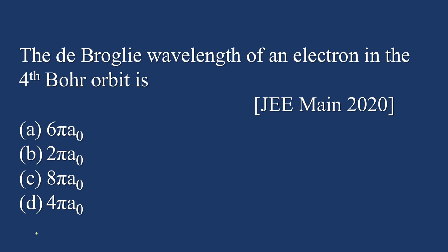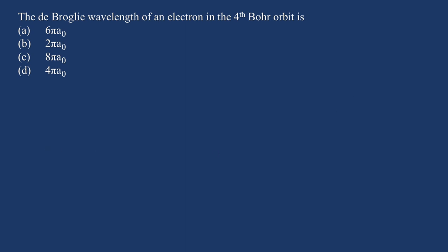The de Broglie wavelength of an electron in fourth orbit is... four options are given, we are going to calculate the answer. Now for calculating this we can use this formula: n lambda equal to 2 pi r. This is de Broglie equation. We are going to calculate the value of lambda, so I am keeping lambda in one side and rest of the variable on the other side: 2 pi r divided by n.